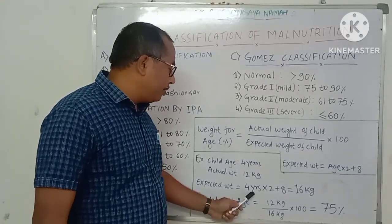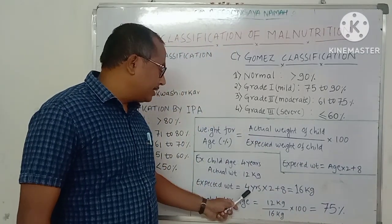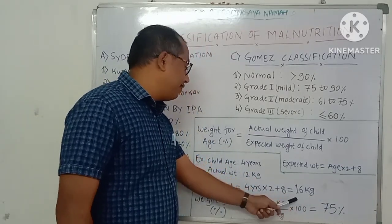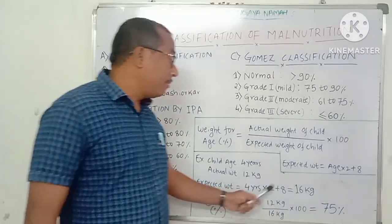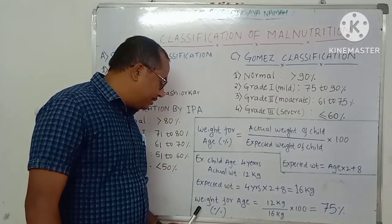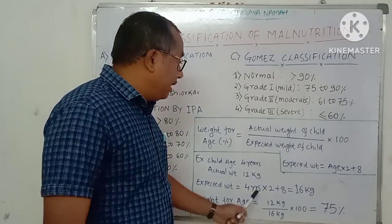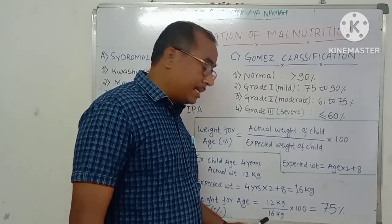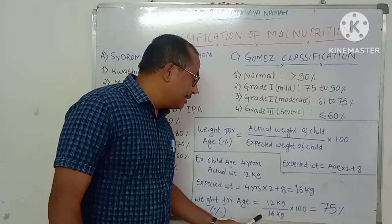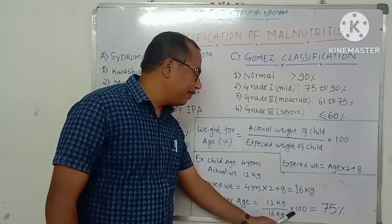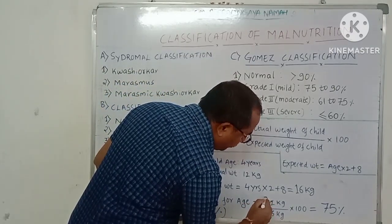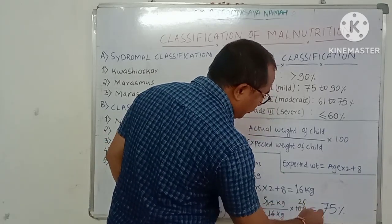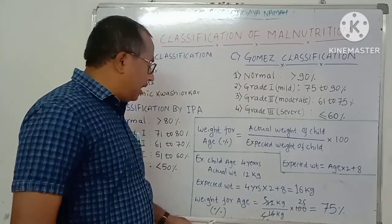Now calculate weight for age percentage: actual weight ÷ expected weight × 100 = 12 ÷ 16 × 100 = 75%. So the weight for age percentage for this child is 75%.